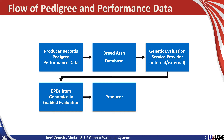In many cases here in the United States, that genetic evaluation service provider is an internal step within the Breed Association. In some cases, the data moves externally to a third party for genetic evaluation. Once the data is evaluated, it's processed through a number of additional edit steps to form a system of equations that are solved to produce expected progeny differences. Oftentimes those are genomically enabled, so a combination of pedigree, performance data, and genomic information is combined in a single step to produce EPDs and subsequently selection indexes. That information is returned to a database and ultimately made available online to seed stock and commercial beef producers through the association's web portal.